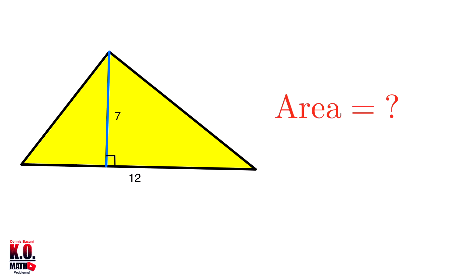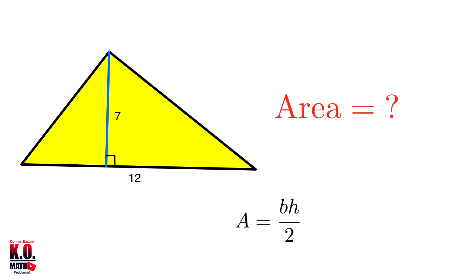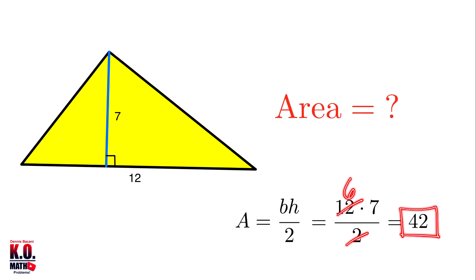In this first problem we're given the base of the triangle equal to 12 and the height or altitude equal to 7. To find the area we use the formula A equals base times height over 2. That is equal to 12 times 7 over 2, and cancelling the common factor 2 we get 6 times 7, which is equal to 42.